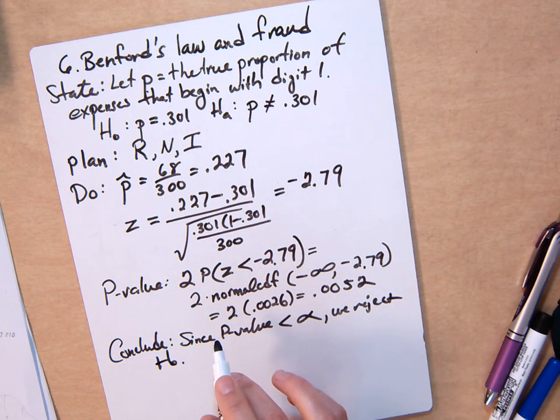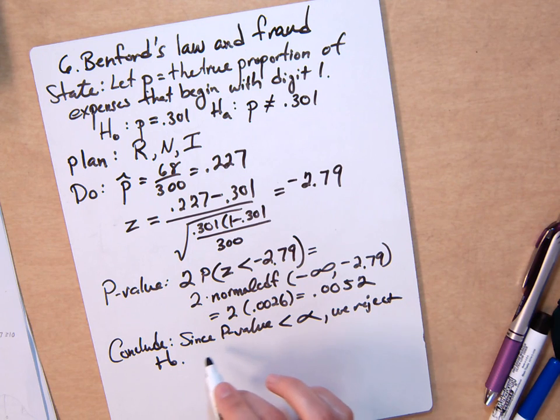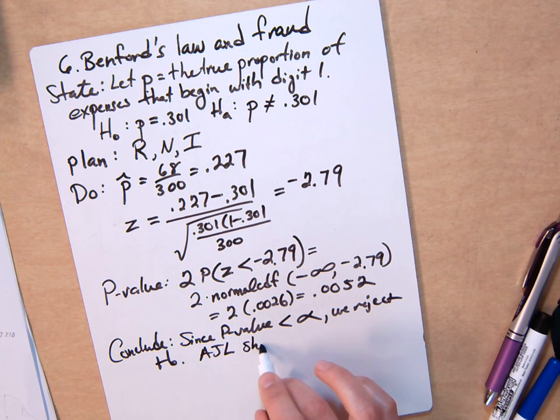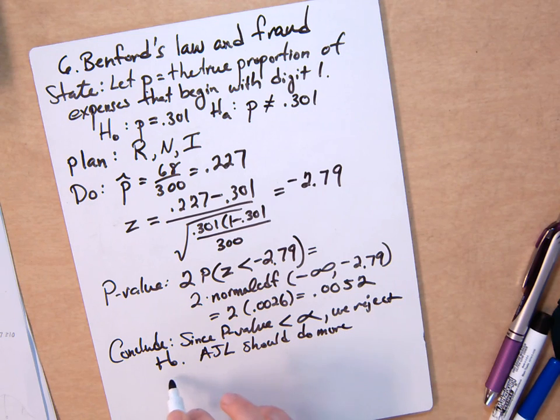There is convincing evidence that the proportion of expenses that have a first digit of 1 is not 0.301. Therefore, AJL should do more investigation of this company.